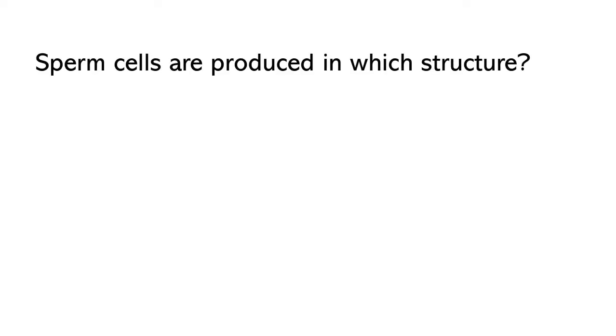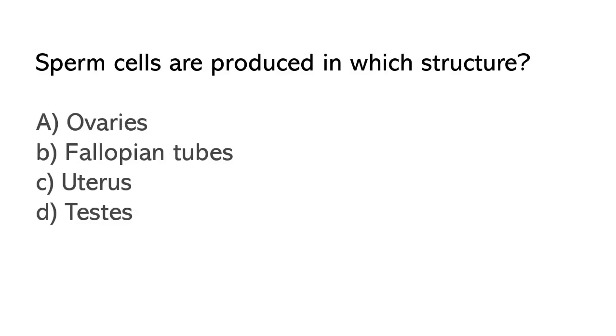Sperm cells are produced in which structure? Options: A) Ovaries, B) Fallopian tubes, C) Uterus, D) Testes. So the correct answer is option D. Testes.